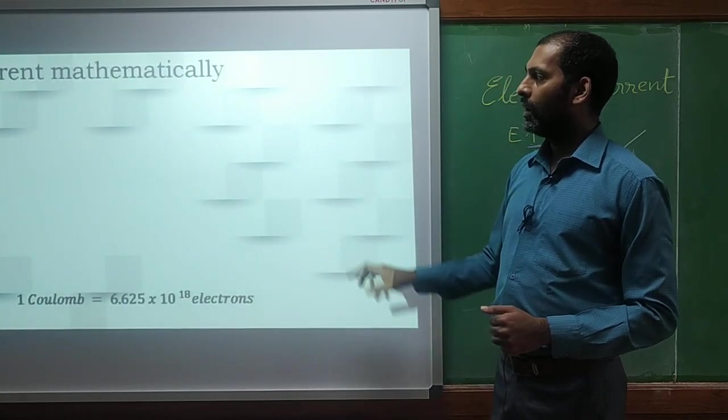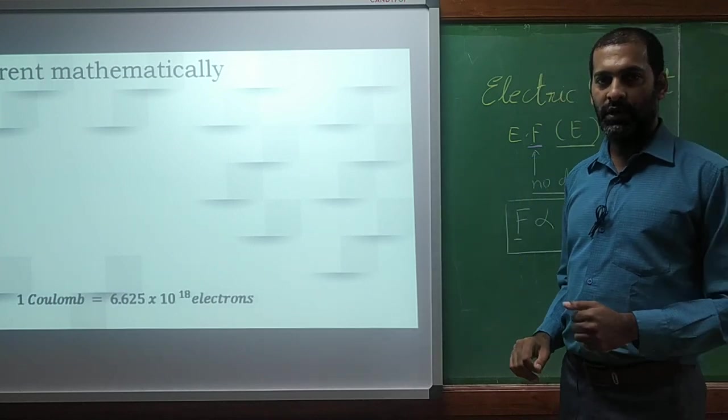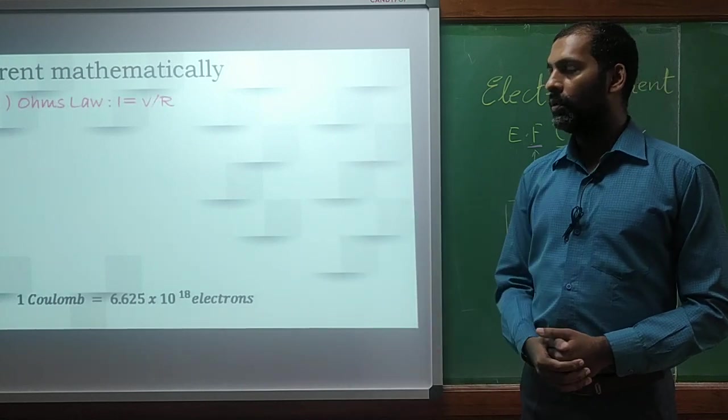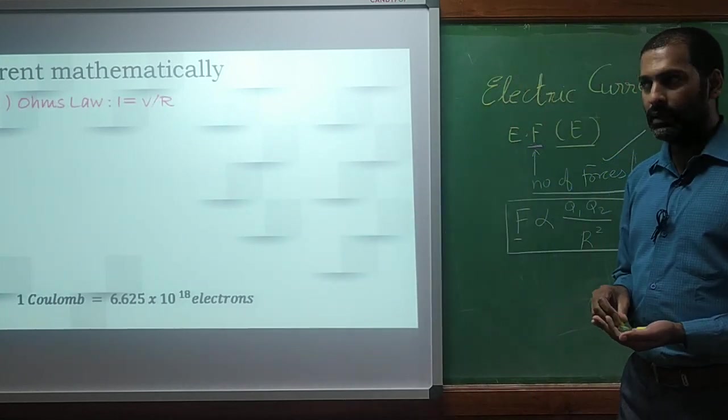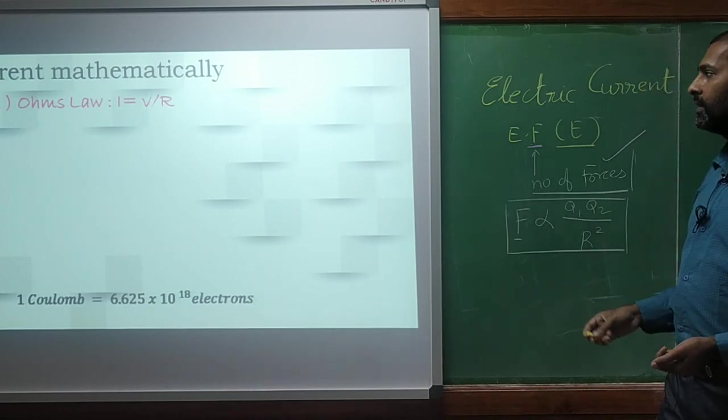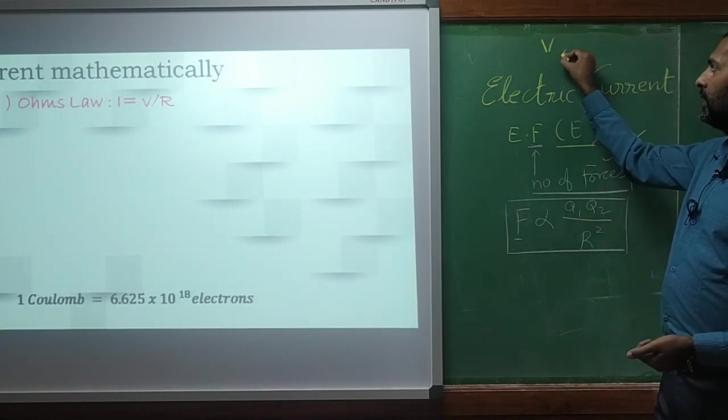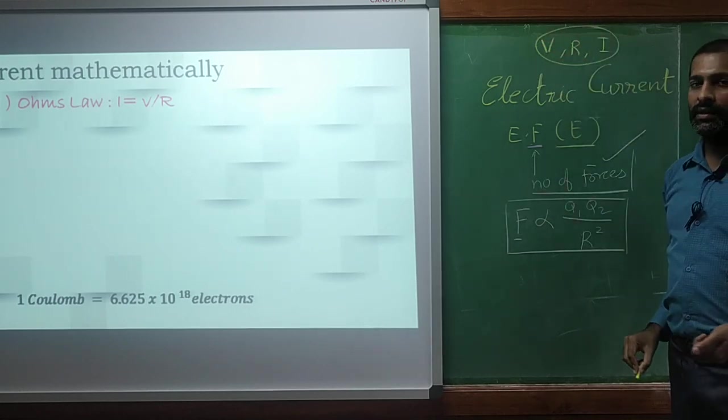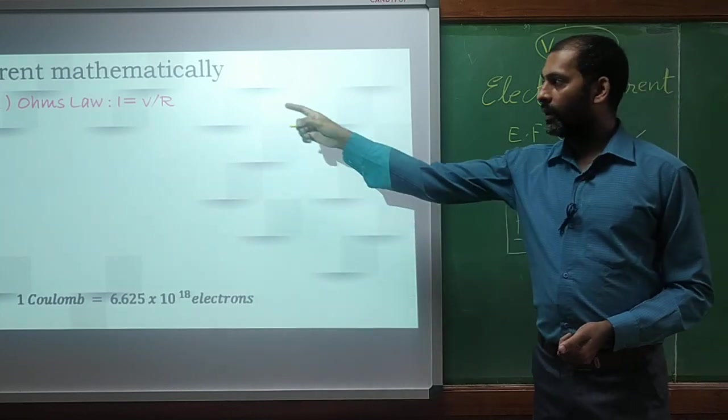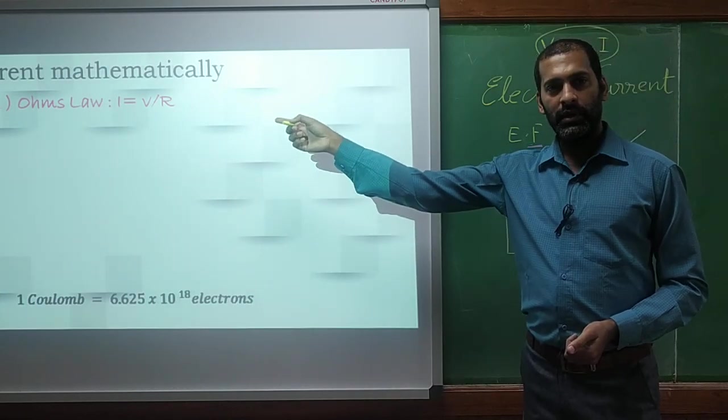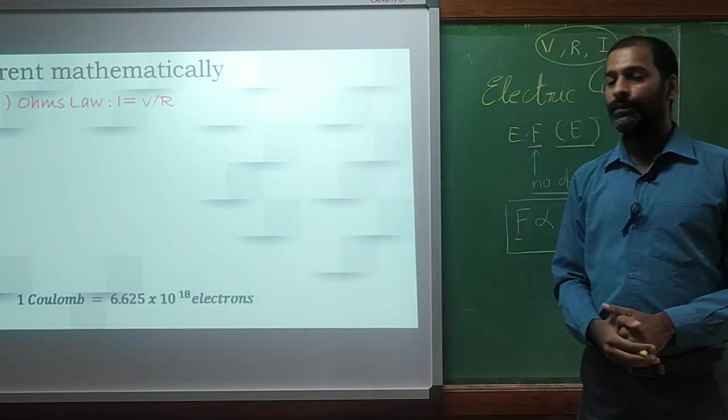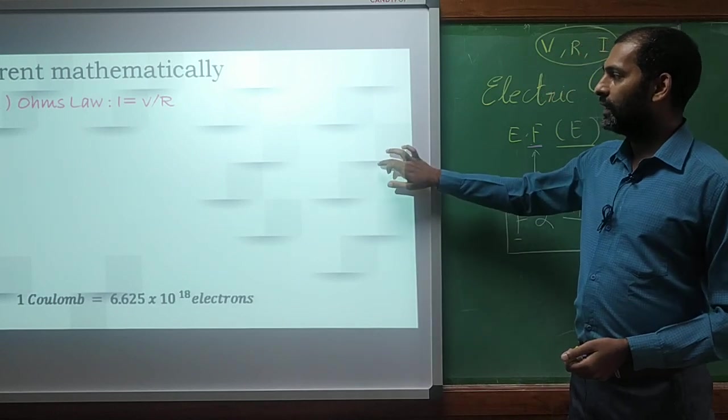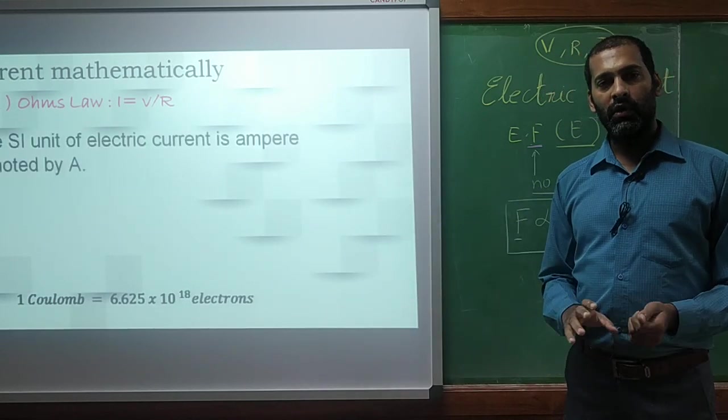We will see all the expression related to current what we have discussed so far. Say first, how to represent current mathematically? The first thing what we have discussed earlier was about the Ohm's law. So what was Ohm's law? It related the current with voltage and resistance. So if I have voltage, I have resistance and I have current. What I can do? I can relate them with Ohm's law. What it states? Current is directly proportional to the voltage and inversely proportional to the resistance. That is nothing but the Ohm's law.